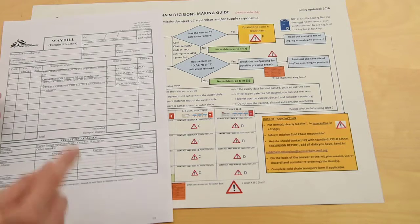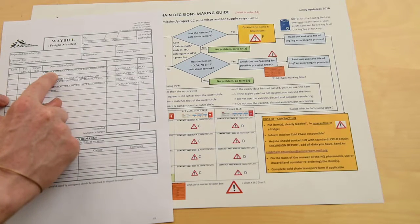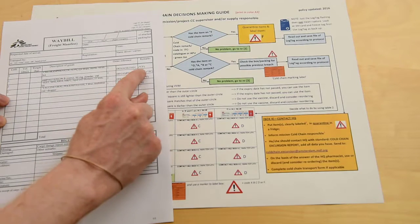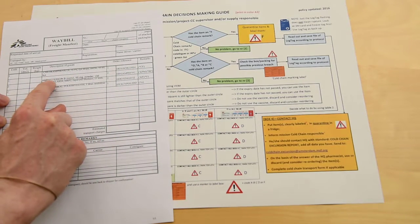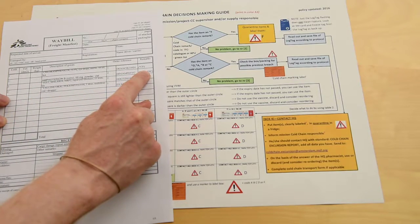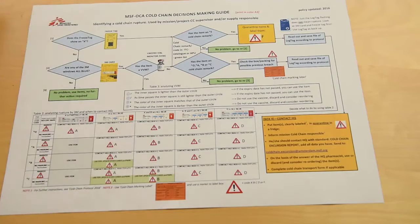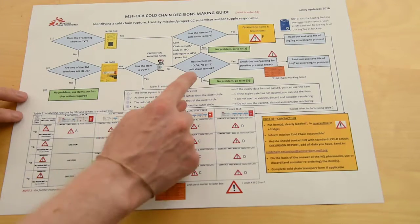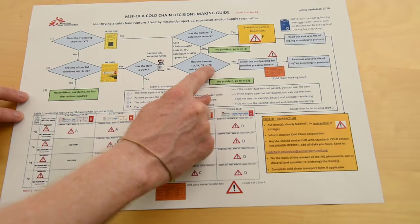We are talking about chloramphenicol, which is a star CF item, and amphotericin B, which is a star BF item. We've seen one has a B and the other has a C, so both items are affected by this high temperature breach.